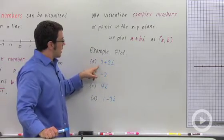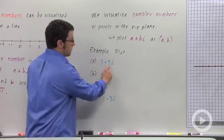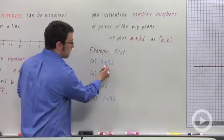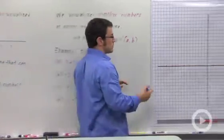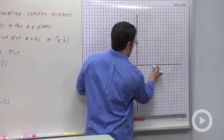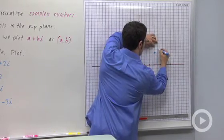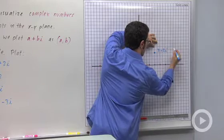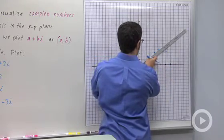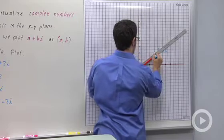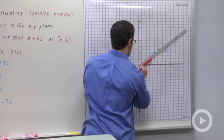For example, plot 3 plus 2i. a is 3, b is 2, so I would just plot (3, 2). So here's 3, 1, 2. That would be the point 3 plus 2i. And sometimes it's nice to draw a line connecting it to the origin.